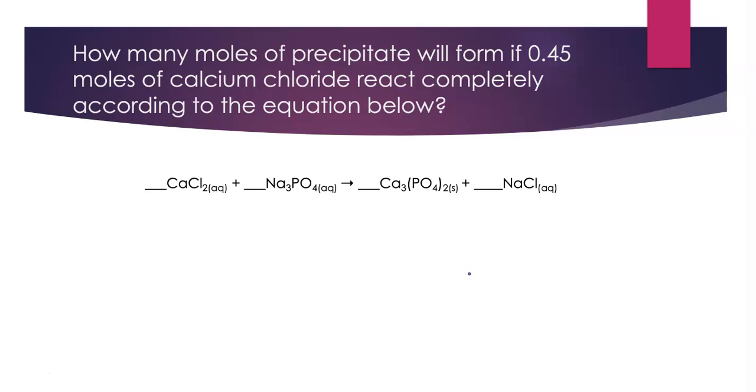Let's do another problem. How many moles of precipitate will form if 0.45 moles of calcium chloride react completely according to the equation below? As before, I've got a skeleton equation, all the formulas of the reactants and products, but it's not balanced.